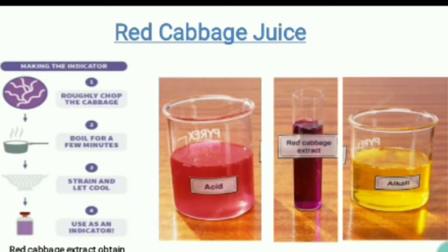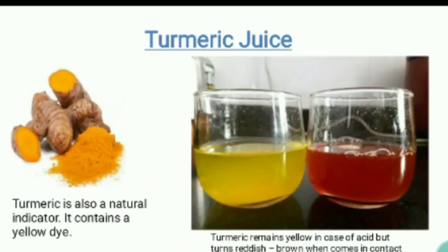Next is red cabbage juice. To make it, the first step is to roughly chop the cabbage and boil it for a few minutes. After boiling, we strain it and let it cool. The solution obtained from this cabbage is used as an indicator. It turns red when in contact with an acid and turns yellow when it comes in contact with a base, so it changes its color depending on whether it contacts an acid or a base.